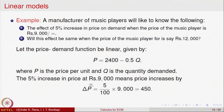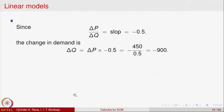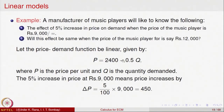A 5 percent increase in price when the price is 9000 means the increase in price delta P is 450. We know that delta P by delta Q — which equals the slope — is minus 0.5 for this linear equation.